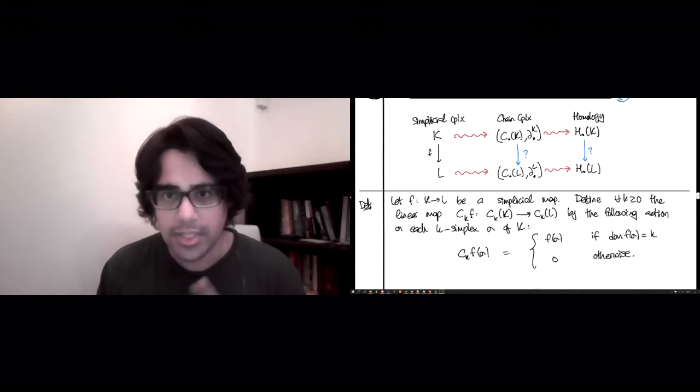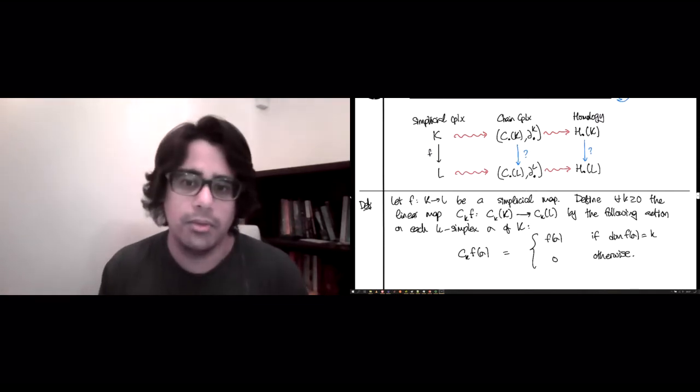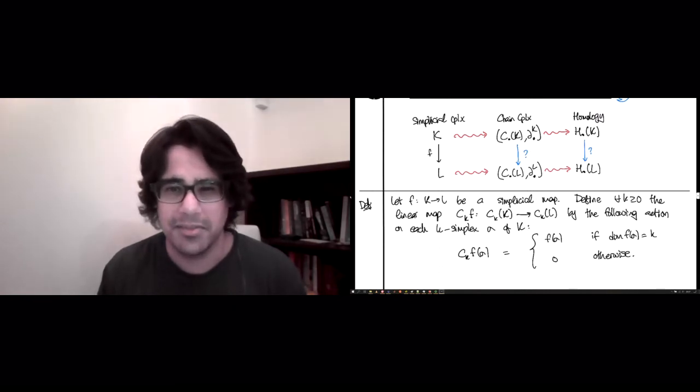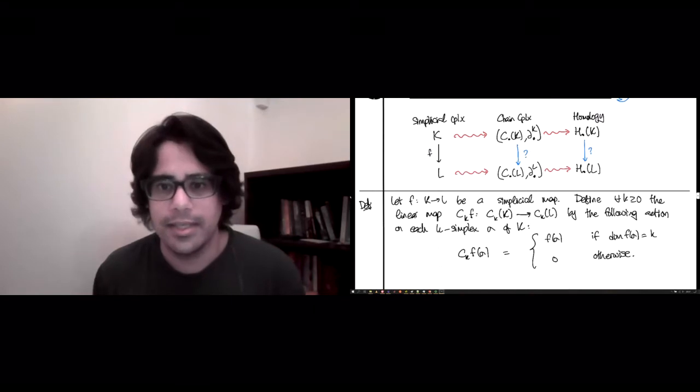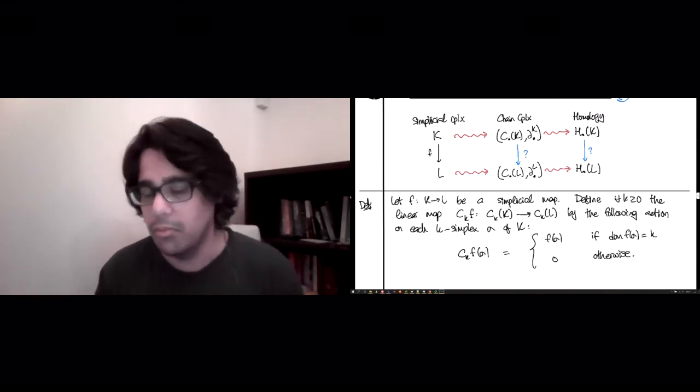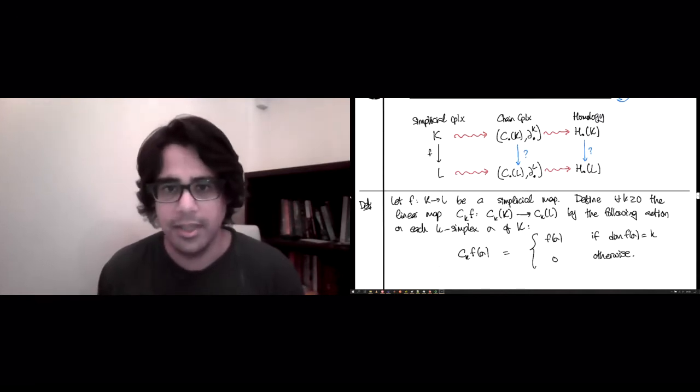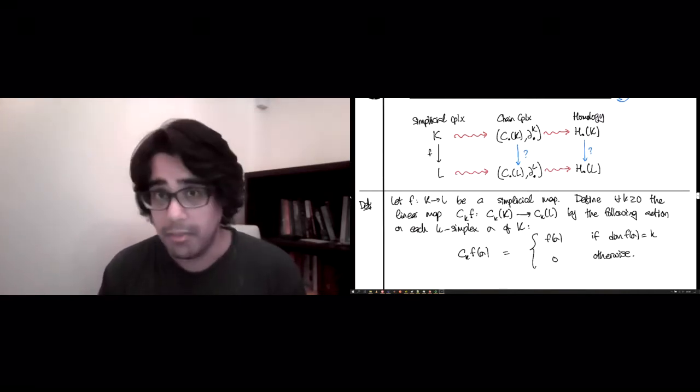And the thing here, the reason we have to send some of these simplices to zero while we preserve the others is because if dimension of f(σ) is not equal to k, then f(σ) is a simplex of dimension strictly lower than k. What this really means is that f is not injective on the vertices of σ. Two of them or more got sent to the same vertex in L, which means you squished some dimension and you lost a dimension while going from K to L using the map f.